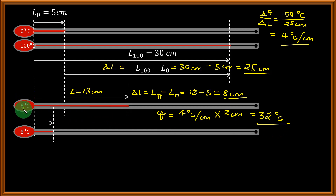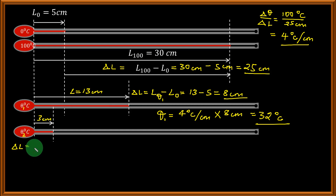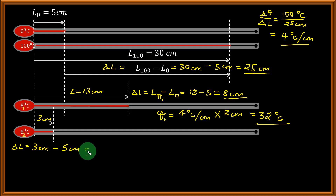We call that temperature theta 1, and it equals 32 degrees Celsius. Now the thermometer is immersed in another liquid where the length becomes 3 cm. What is the temperature theta 2 of this liquid? We calculate the change in length: the new length 3 cm minus the length at 0 degrees Celsius (5 cm), giving us a change in length of minus 2 cm.